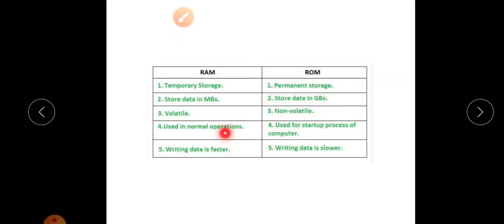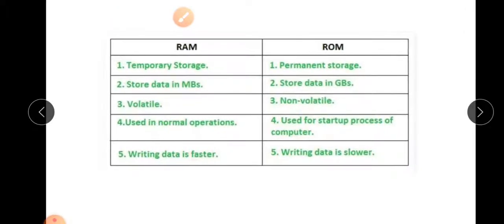Now we will continue from the differentiate between RAM and ROM. This is not in your textbook children, just for your extra knowledge. RAM is a temporary storage while ROM is a permanent storage. RAM stored data in MBs, that is Megabytes, and ROM stored data in GBs, that is Gigabytes.